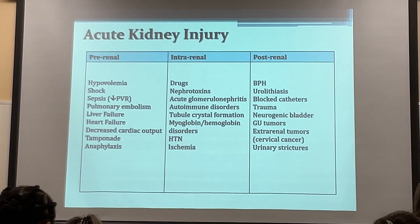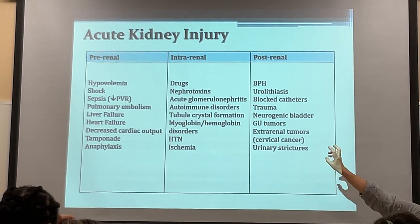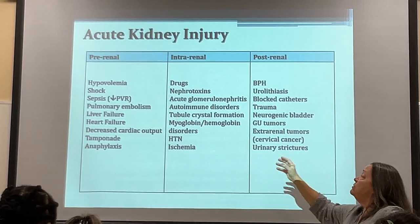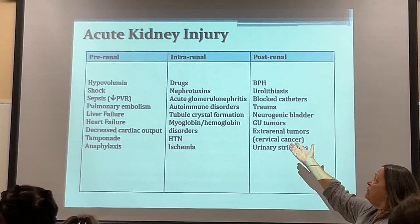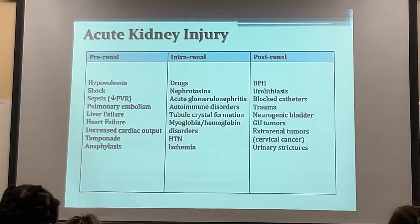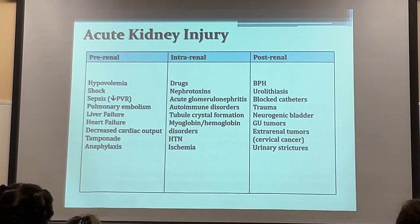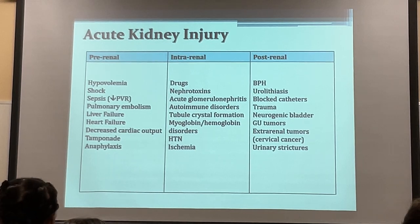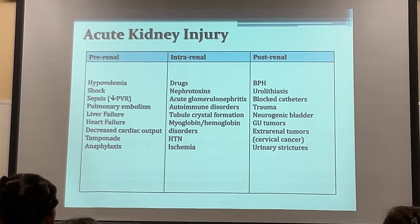Intra-renal causes include drugs and nephrotoxins. Acute glomerulonephritis from beta-hemolytic strep — common in peds — requires antibiotics to stop the inflammatory process. Strep responds to penicillin and cephalosporins. You treat whatever the doctor orders. Autoimmune disorders — lupus, rheumatoid arthritis, sarcoidosis — any autoimmune disease that affects the glomeruli can cause intra-renal damage.